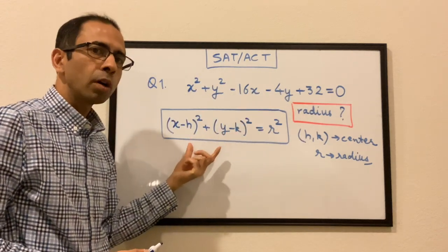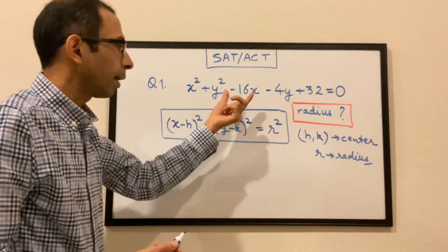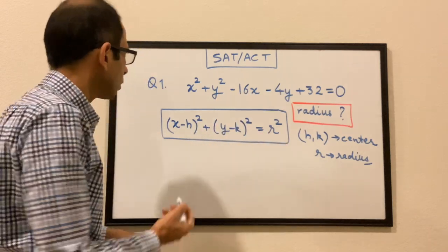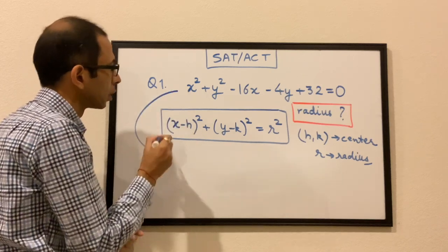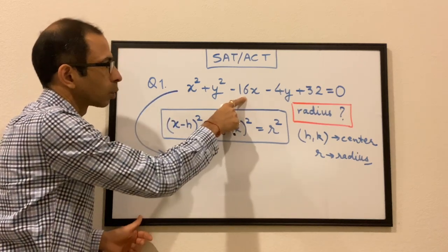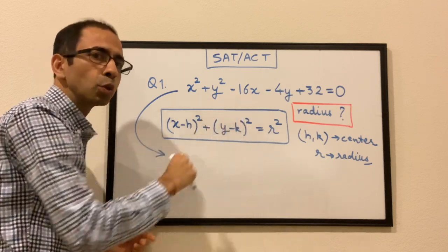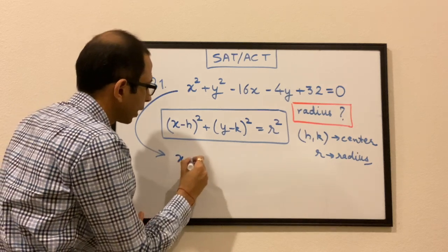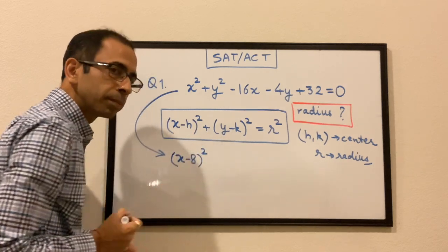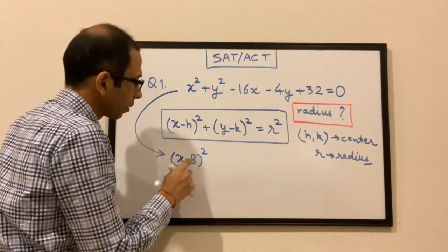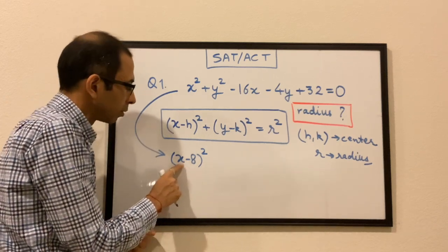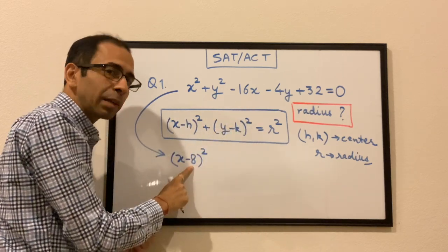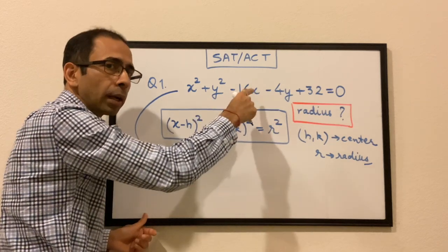All we have to do is transform this equation into that standard form to find the radius. We take the coefficient of x, divide it by 2: −16 ÷ 2 = −8, so we write (x − 8)². When we expand it back we get x² − 16x, which is what we wanted, plus an extra 64.